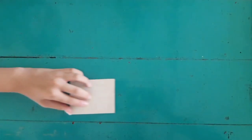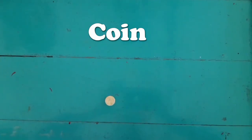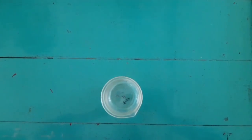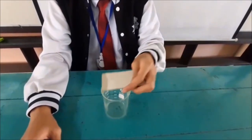Inertia can be demonstrated with this simple experiment. It is so simple in fact that all you need is a piece of cardboard, a coin, and a beaker. Simply place the cardboard on the beaker, then put the coin on top of it.